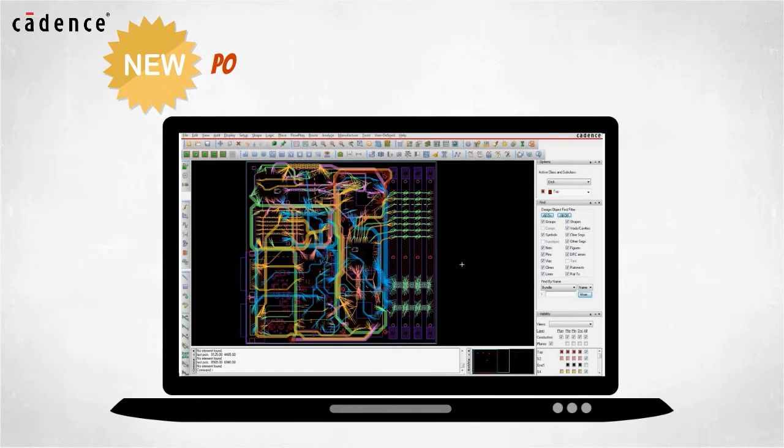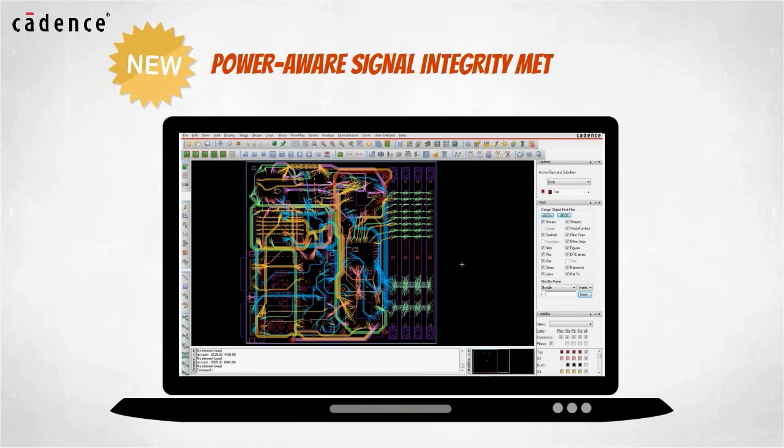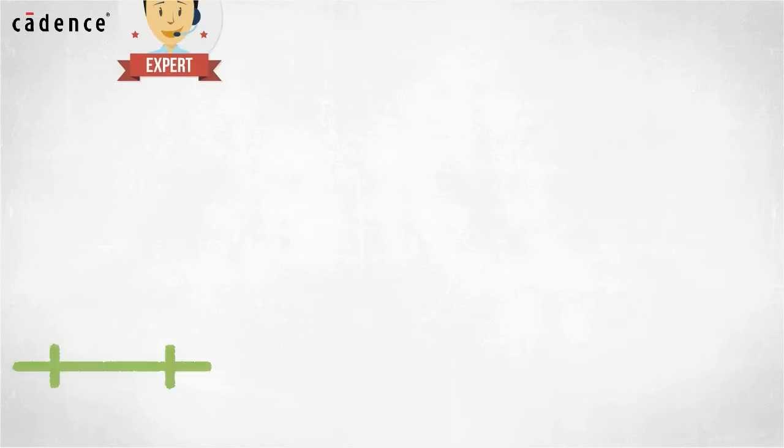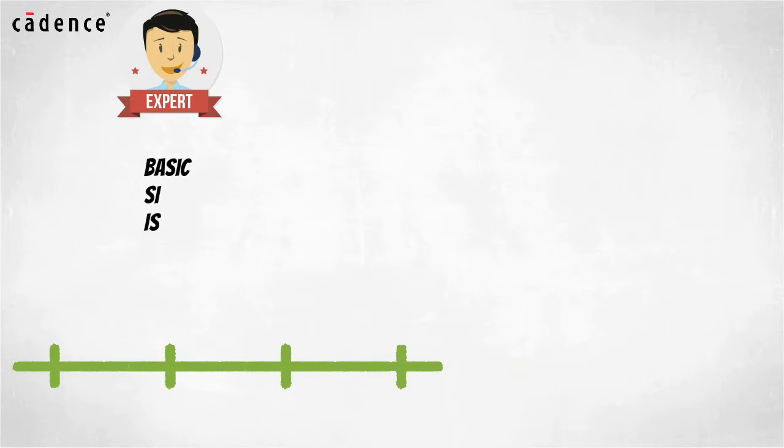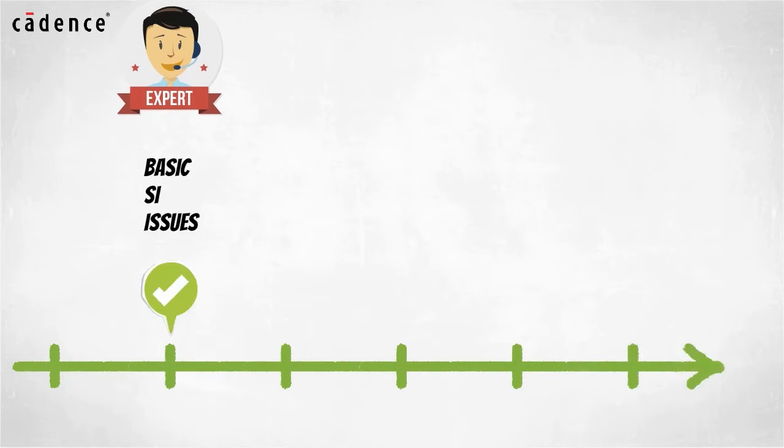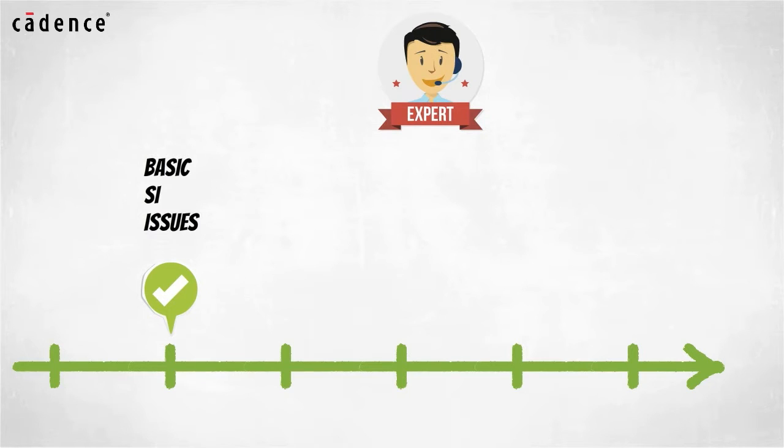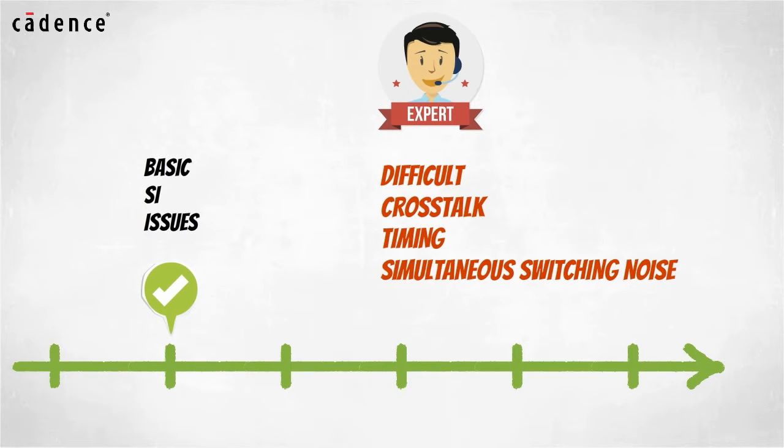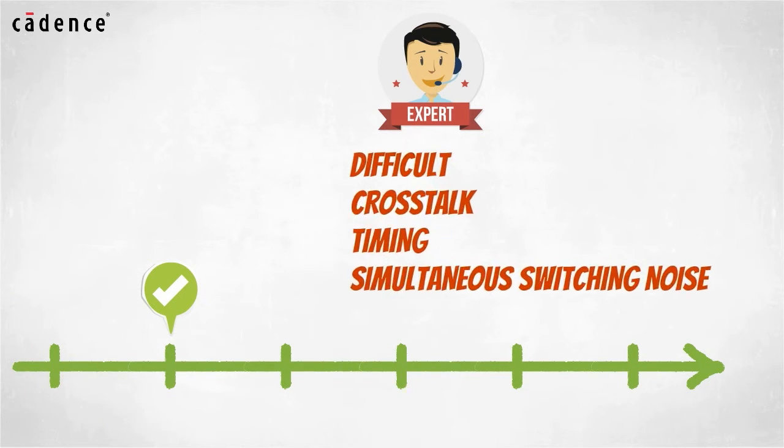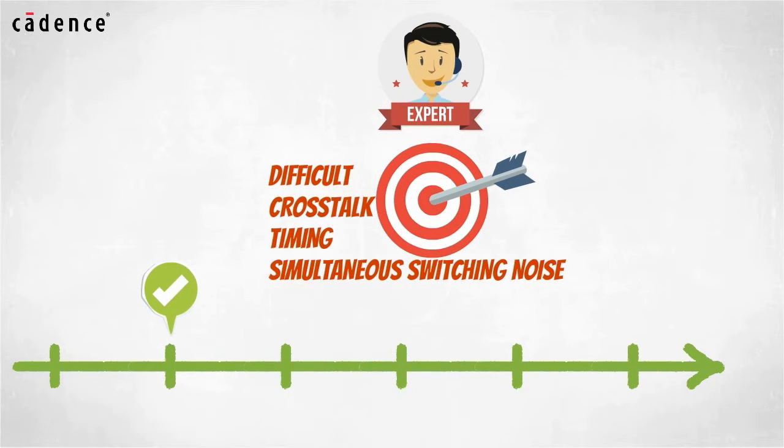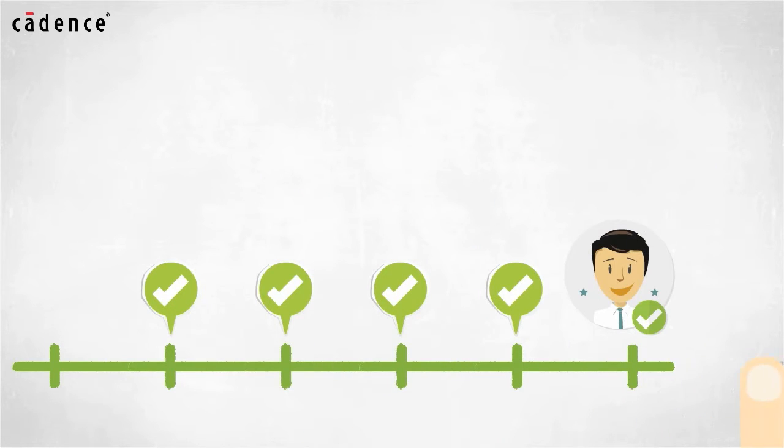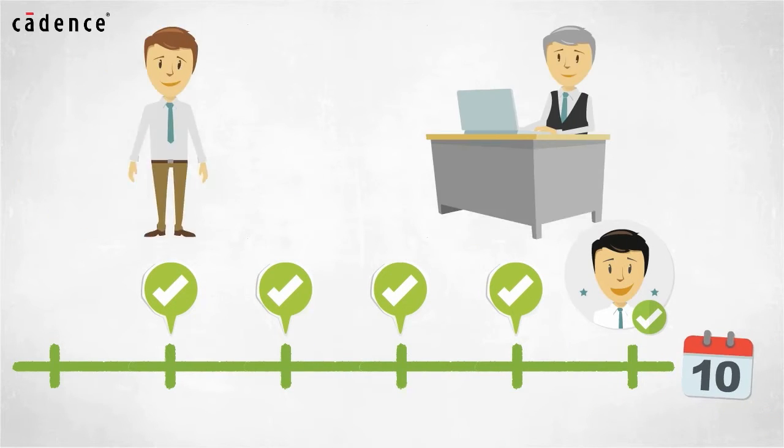This approach is an important step in a power-aware signal integrity methodology. By addressing basic reflection related SI issues early in the design cycle, signal integrity experts are freed up to focus on the difficult crosstalk, timing, and simultaneous switching noise problems as PCB routing tasks progress. By taking this whole category of problems off the table up front, the more complex SI problems can be given proper focus and you can be more confident that you can sign off on your design on a predictable schedule, and that will keep your boss happy.